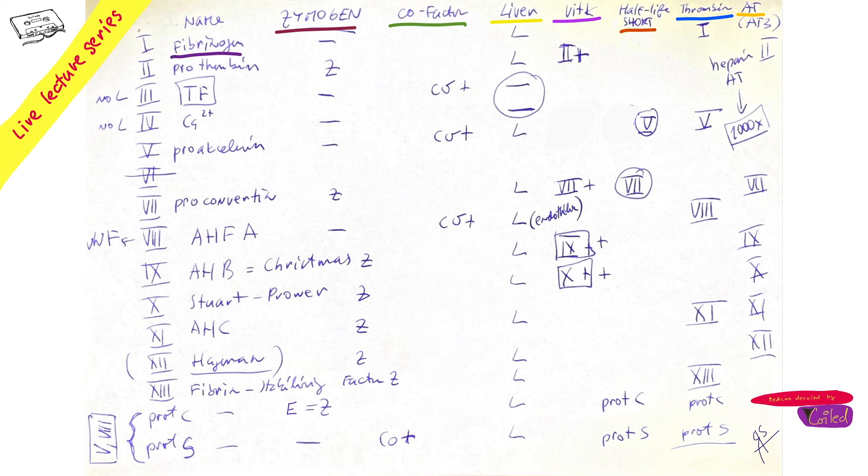So what is factor one? It's fibrinogen. Factor two: prothrombin. Factor three: tissue factor. Four: calcium. Five: what is this one? It's pro-accessory. We're going to talk about it. Problems with a mutated factor five causes Leiden mutation, but it's not for today because we're doing bleeding and Leiden means thrombophilia.